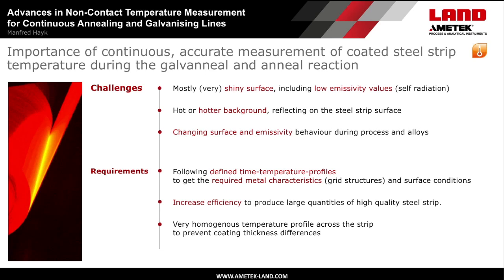The main challenges for temperature measurement: in these processes, the steel strip surface has a shiny or very shiny surface and therefore a pretty low emissivity. Combined with the hotter background radiation from the furnace refractory and the changing emissivities during the process and with different alloys, the challenge is to get the right temperature reading continuously. It is essential to control the process and ensure the right metal characteristics are reached with the end product. Further, it is necessary to get a homogeneous temperature profile across the strip to prevent any coating thickness variation and to increase production efficiency.